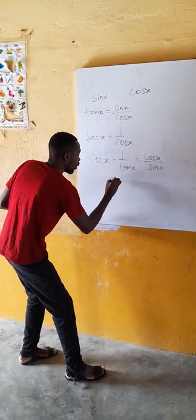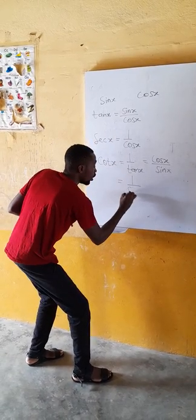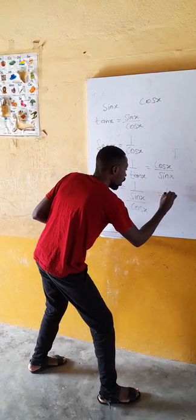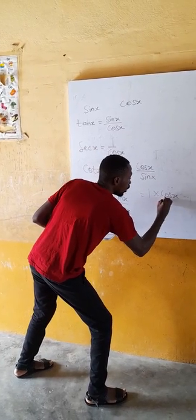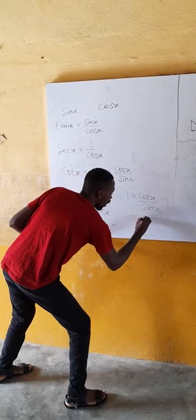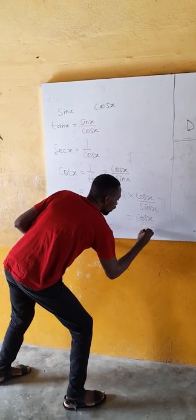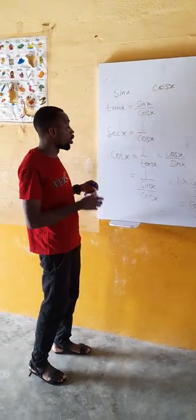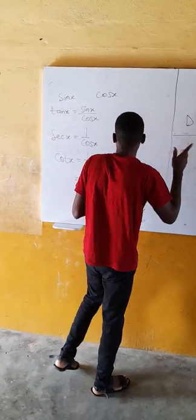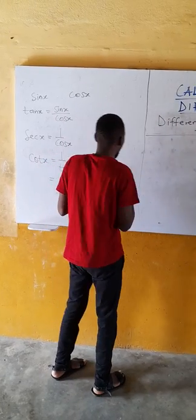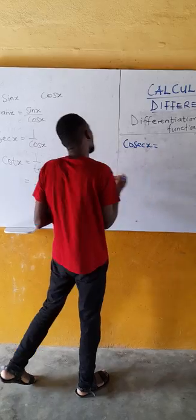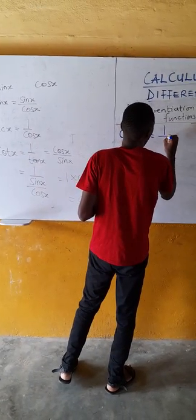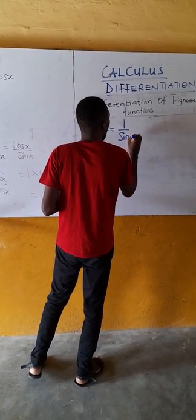So tan x is sin x over cos x, and to reverse this we get cot x equals cos x over sin x. Another identity you must know is cosec: cosec is the inverse of sin, so cosec x equals 1 over sin x.